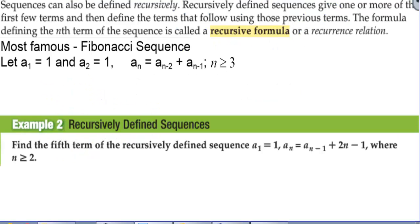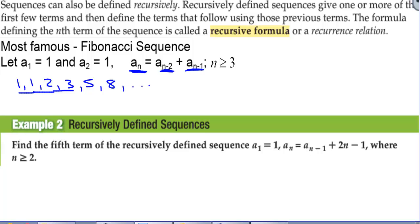Sequences can also be defined recursively. Recursively defined sequences give one or more of the first few terms and then define the terms that follow using those previous terms. The formula is called a recursive formula or a recurrence relation. One of the most famous is the Fibonacci sequence, where a sub 1 = 1, a sub 2 = 1, and each subsequent term is the sum of the two before: 1, 1, 2, 3, 5, 8, and so on.